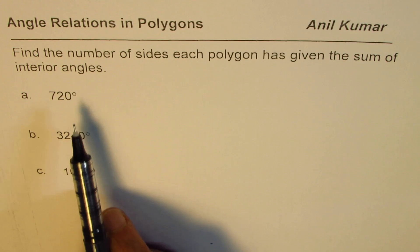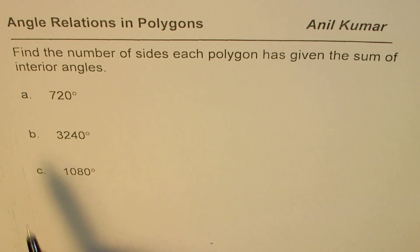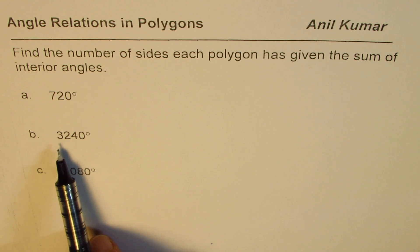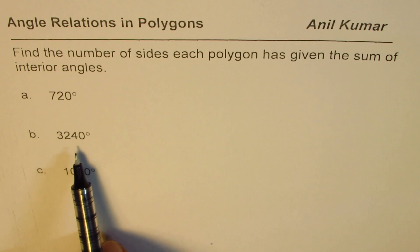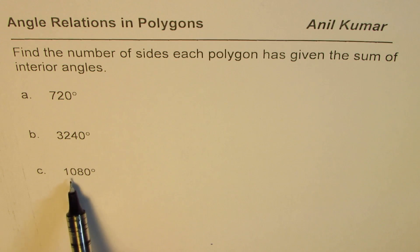the polygon has. Part b: the interior angle sum is 3240 degrees, find the number of sides. Part c: the sum of interior angles is 1080 degrees, find the number of sides.